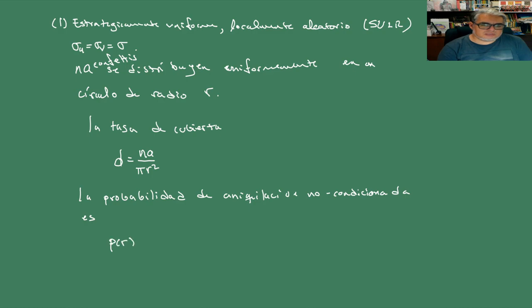La tasa de cubierta la podemos calcular haciendo la probabilidad geométrica. Lo que estás cubriendo de forma efectiva son los n por a confetis sobre el área del circulito que es π por r cuadrado. Tomando esta tasa cubriente, la probabilidad de aniquilación no condicional o no condicionada es P que depende de r, y va a ser un producto de dos cosas: 1 - e^(-r²/2σ²), que son los errores de sesgo, y 1 - e^(-na/πr²), que son los errores de dispersión.